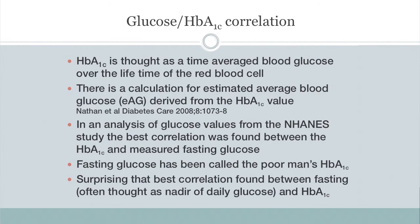So why are glucose and A1c correlated? A1c is thought to be a time-averaged blood glucose over the lifetime of the red blood cell. We can look at glucose as being a snapshot — the glucose level at this particular moment in time. Hemoglobin A1c is like a video: what glucose has looked like over the past 90 to 120 days. Think of glucose as a snapshot and A1c as a video.